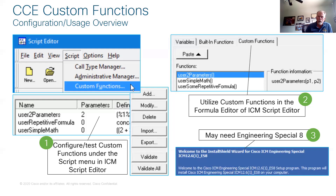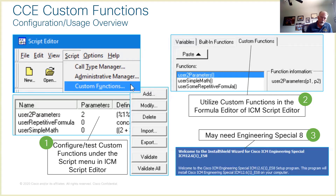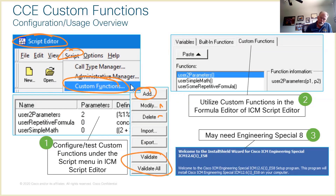Let's look at custom function configuration and usage. Configuration-wise, we'll find it in Script Editor in ICM on one of your AWs — DAW or CAW admin workstations. Under Script, you've got this thing called Custom Functions. We'll poke around here, show you how to add custom functions. You can also modify, delete, import, or export them. If you had previous systems, you can import rather than rebuilding long formulas.